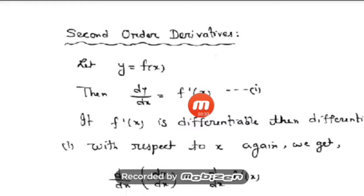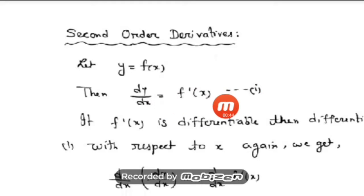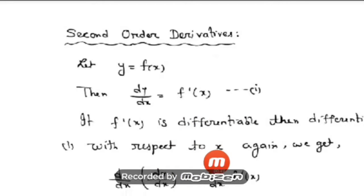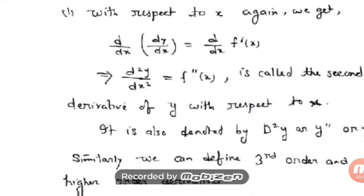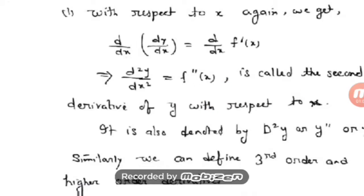Now suppose this derivative is again differentiable. Then, differentiating f'(x) again on both sides with respect to x, we can write d/dx of (dy/dx), or on the right side d/dx of f'(x). This is denoted by the symbol d²y/dx² or f''(x), and this is called the second derivative of y with respect to x.